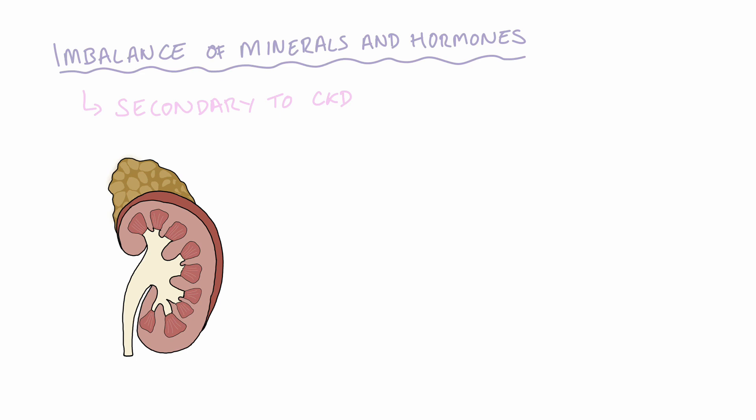As the kidneys are responsible for the formation of active vitamin D, which is called calcitriol, patients with chronic kidney disease have a reduced amount of vitamin D formation. One of the functions of vitamin D is to facilitate the absorption of calcium from the gut. With less active vitamin D, there is significantly less calcium absorbed from the diet.